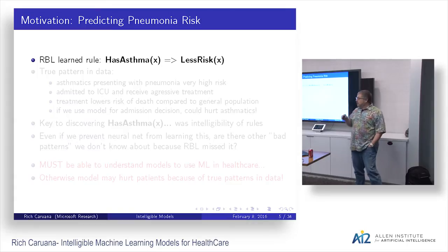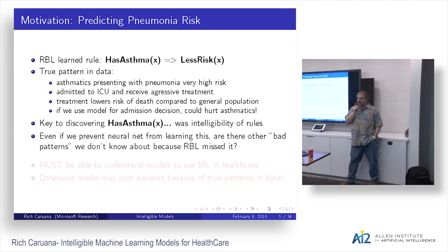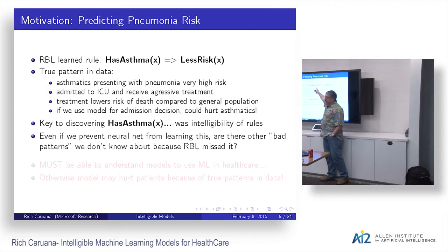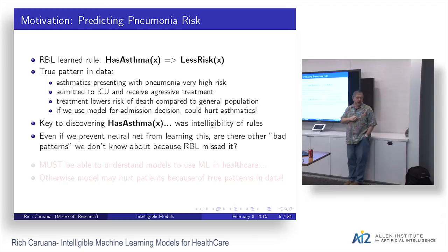One of my friends at the University of Pittsburgh was training rule-based learning and said, 'Rich, I learned a funny rule last night. I learned this rule: has asthma lowers your risk of dying from pneumonia.' So it's actually good to be asthmatic if you have pneumonia — it lowers your risk. We brought it up at the big meeting with the doctors, and the doctors thought for a second and said, 'It's probably true in our data.'